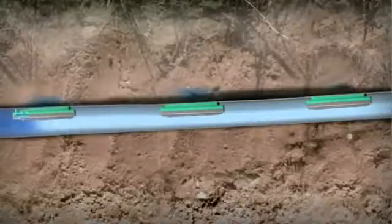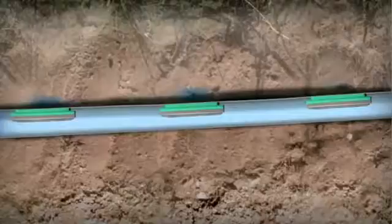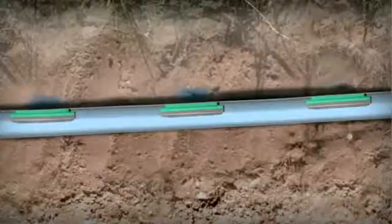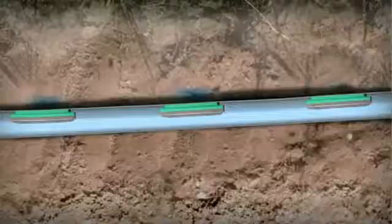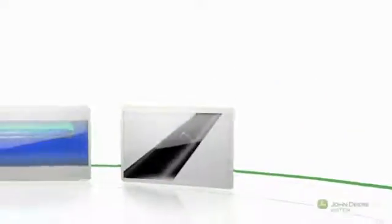With its efficient and reliable flow regulation and clog prevention design, the John Deere D5000 drip line is an ideal irrigation solution in a wide range of crops and conditions.